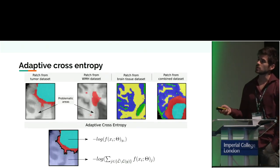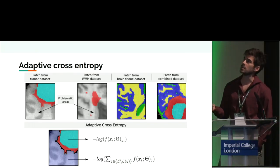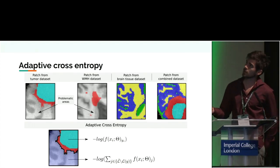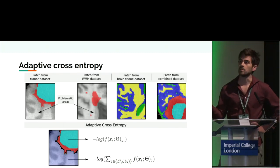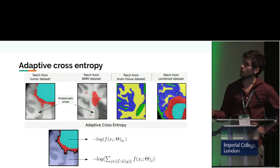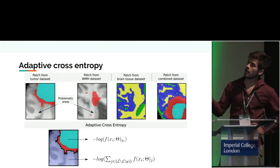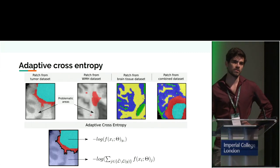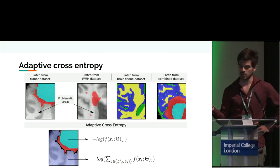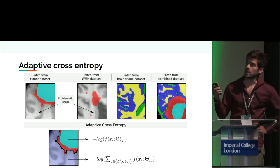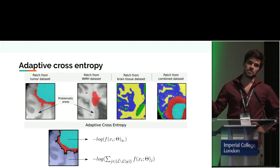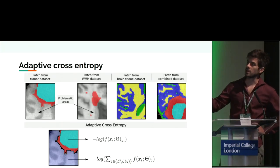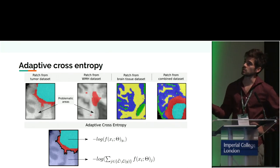What we proposed is an adaptation of the traditional cross entropy, by looking at where the problems occur when training a single model. The problems happen when you have a lesion image and a lesion background. This lesion background is something that in some images you label as gray matter, and in others you label as background. This is what confuses the model.